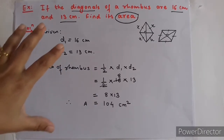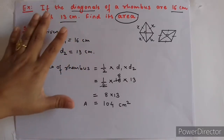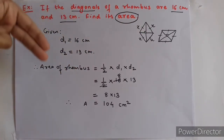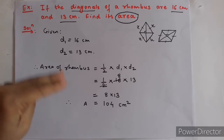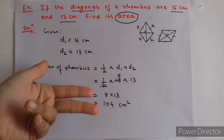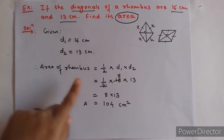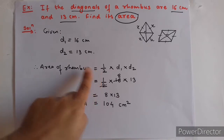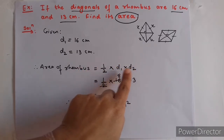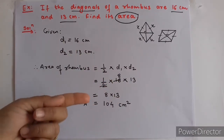So dear students, in this example you need to see carefully what is given and which formula to use. It is possible that you need one or two formulas. Here, since both diagonals are given, we use half into D1 into D2. After substituting the values, the answer is obtained. Now we will solve another example.